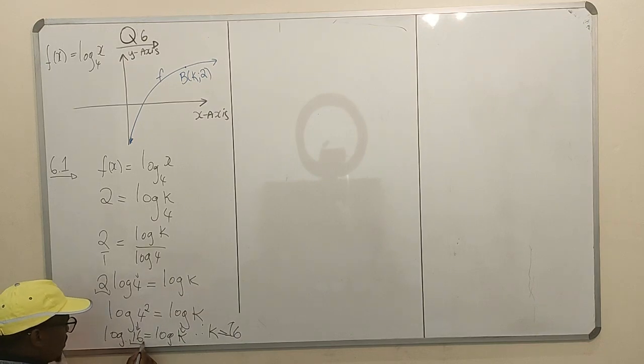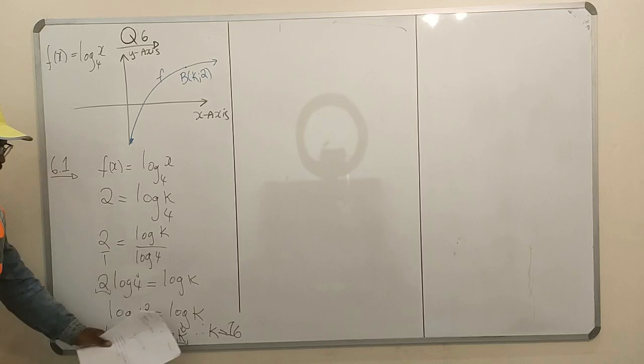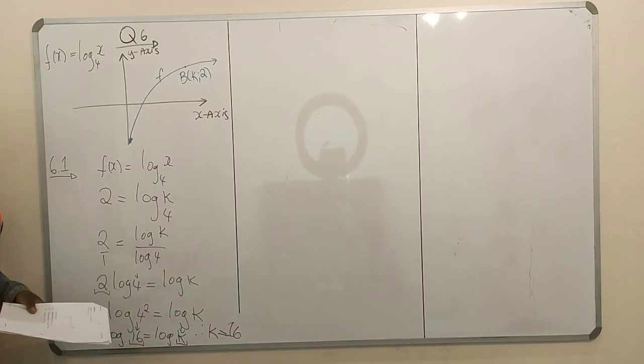Which means this is exactly that. Therefore, your k equals 16. You can see, log this, log that. If you have 16, then that is 16. Your k equals 16. We're done.